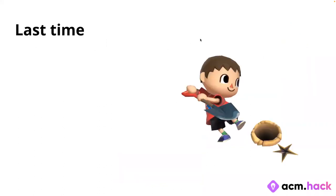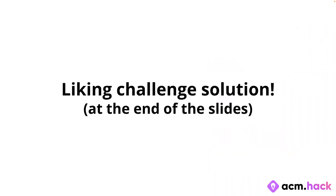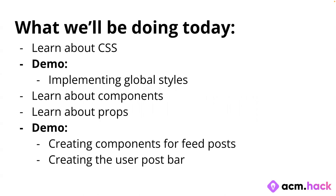As a recap of last time: Andy taught us React with Axios — how we connect endpoints from the front end to the back end, how to map posts to display them on a feed, and how to connect endpoints. They also presented a liking challenge. The solution is a bit long for the presentation, so we've put it at the end of the slides. If it's not in the Discord, someone please post it.